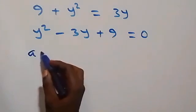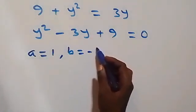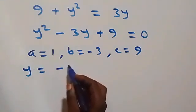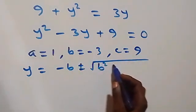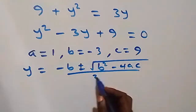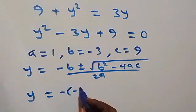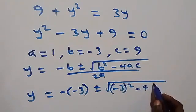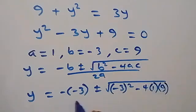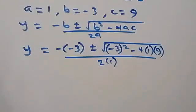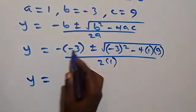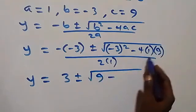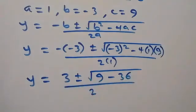Here a = 1, b = −3, and c = 9. Using the quadratic formula y = (−b ± √(b² − 4ac)) / 2a, we get y = (3 ± √(9 − 36)) / 2, which gives y = (3 ± √(−27)) / 2.